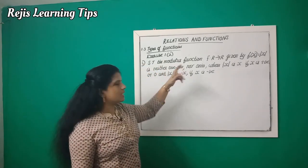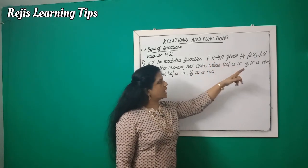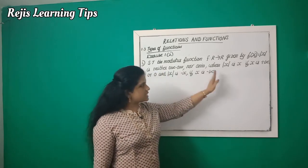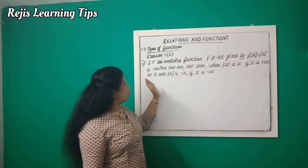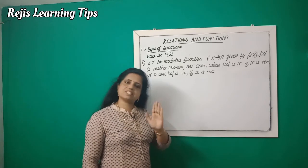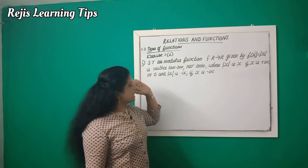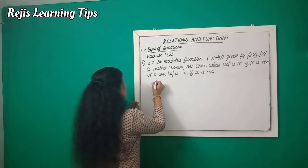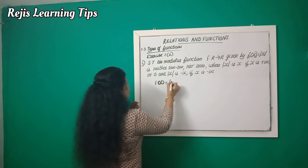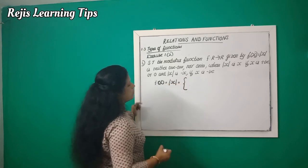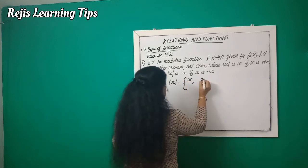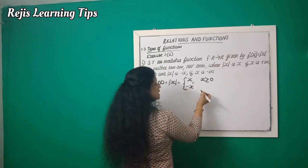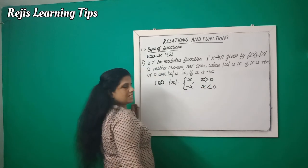Fourth question: Show that the modulus function f, such that R to R given by f(x) = |x|, is neither one-one nor onto. Here, mod of x equals x if x is greater than or equal to zero, and mod of x equals negative x if x is less than zero.